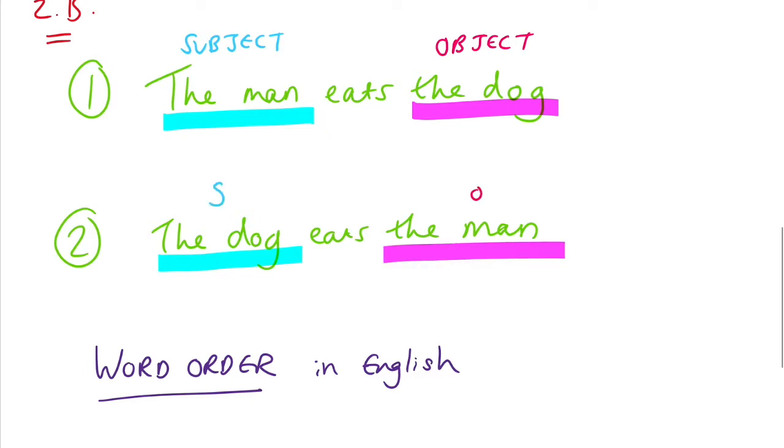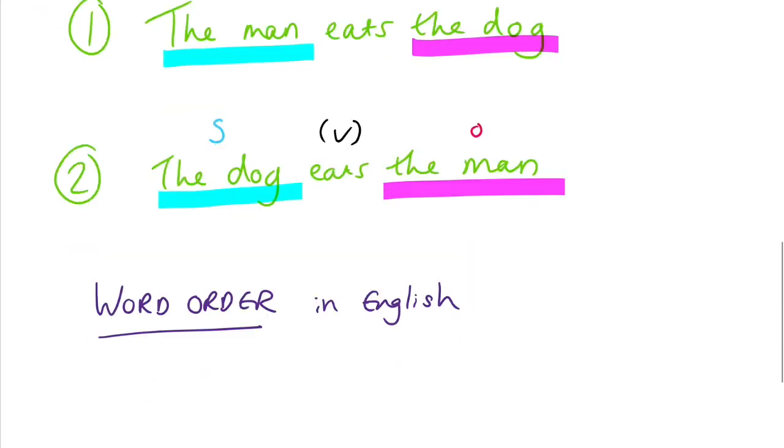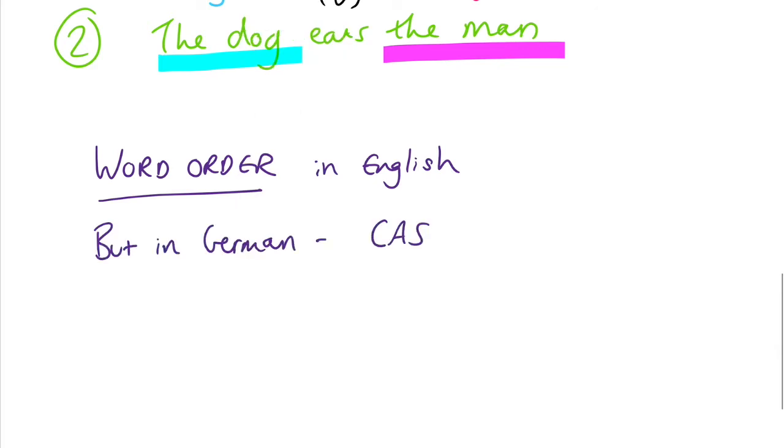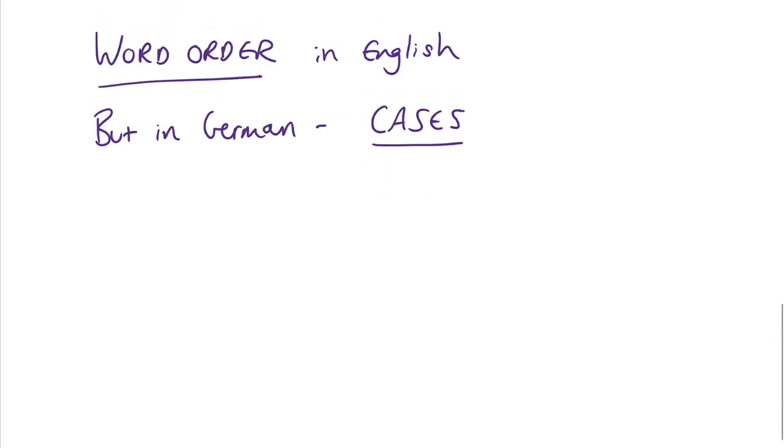Whereas in sentence number two, we've reversed the order. This time, because dog comes before the verb, we can see that this dog is doing the eating and the man is being eaten. But in German, it doesn't work that way. We use cases instead.